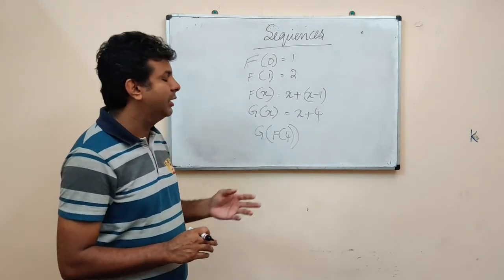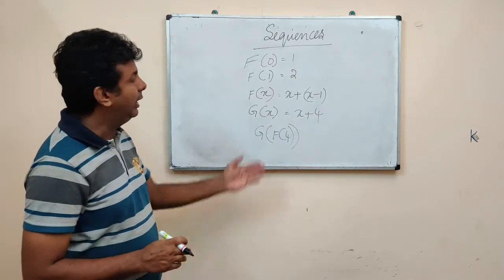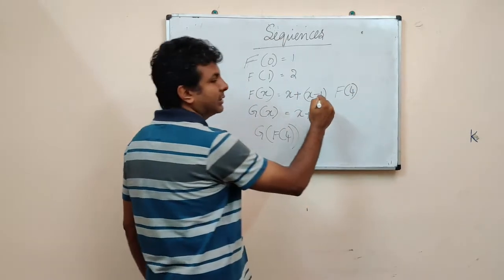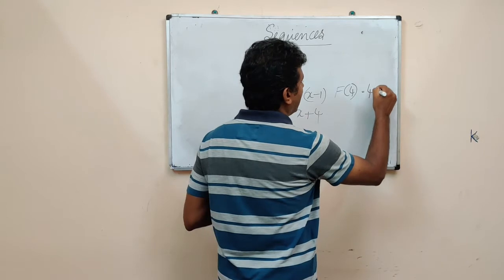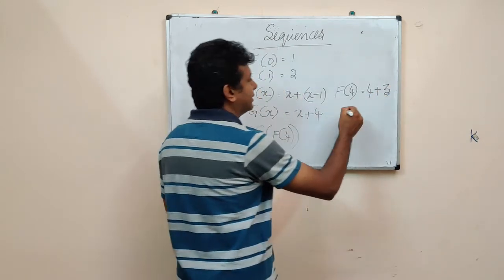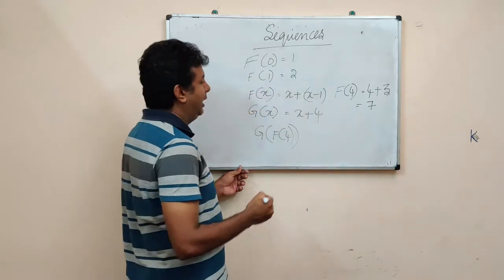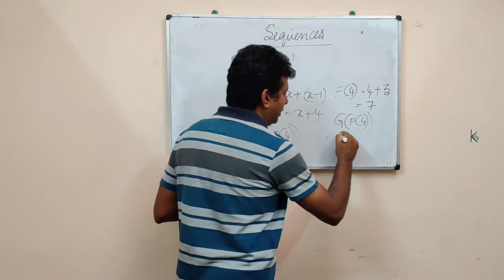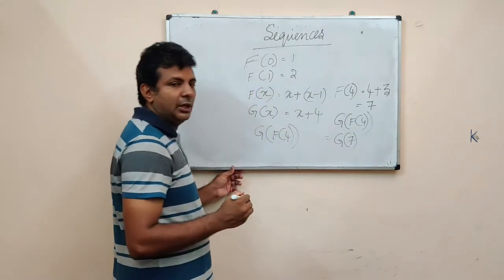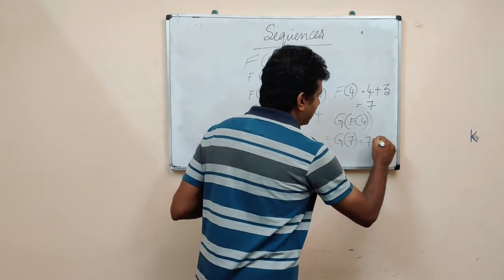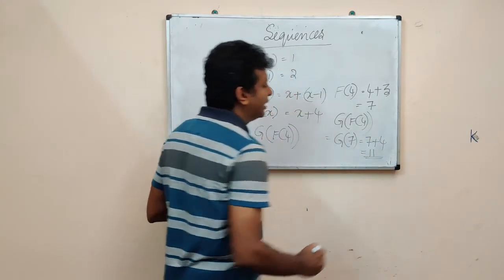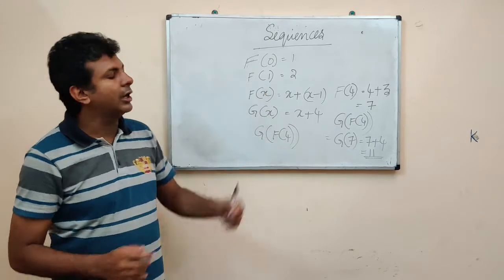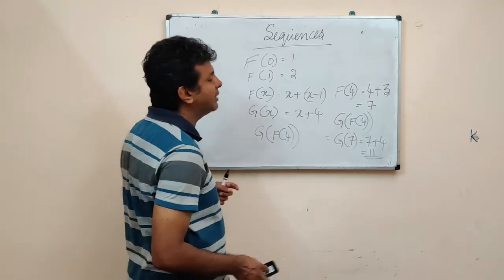Now let us see what will be G of F(4). What is F(4)? F(4) is X plus (X minus 1), so that is 4 plus (4 minus 1), which is 4 plus 3, equal to 7. And what is G of F(4)? G of F(4) is G(7), and that will be 7 plus 4, which is equal to 11. This is called a combination function which has an addition as the parameter.